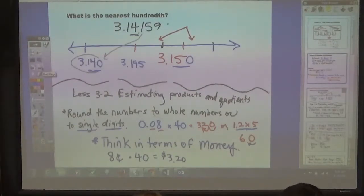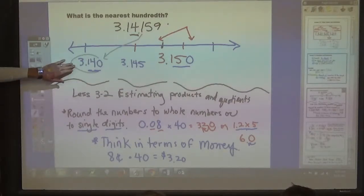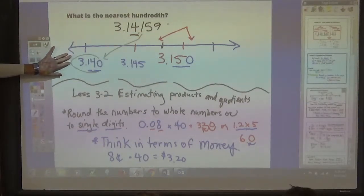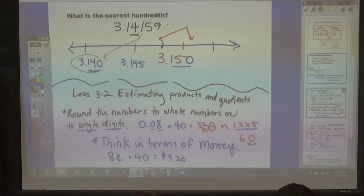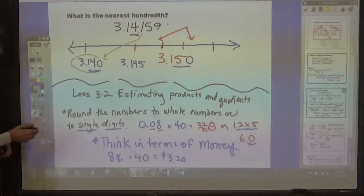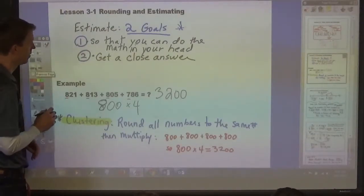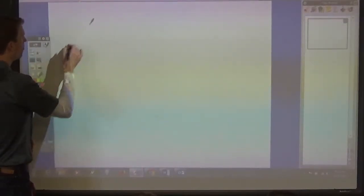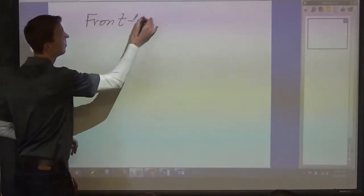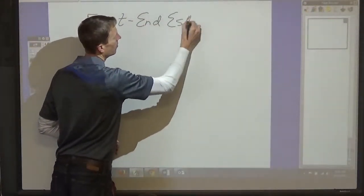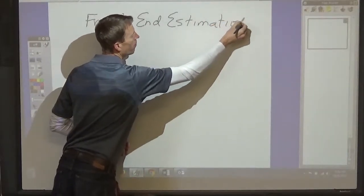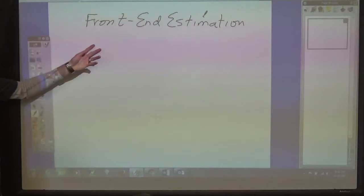Okay, let's go on. Let's see. That's probably all you need. Let's talk about front end estimating. Let's go back. When the book talks about front end estimation, it's talking about taking the front, the front, the first two numbers, and then adding or subtracting the front end of the second number.